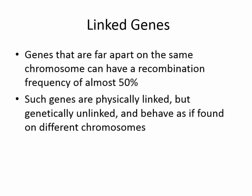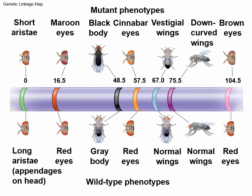So Mendel was actually lucky. Here is a genetic linkage map showing the chromosome and where those characteristics reside.